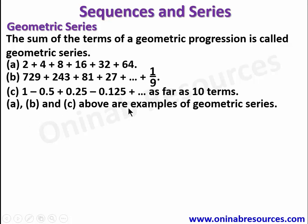A, B, and C are examples of geometric series. In A, the first term is 2 and the last term is 64. The common ratio is 2, since 2 times 2 gives 4, and 4 times 2 gives 8, and so on. In B, the first term is 729 and the last term is 1 over 9, all summed together. The common ratio is 1 over 3. The same pattern applies in C.